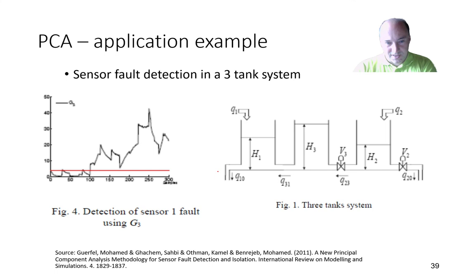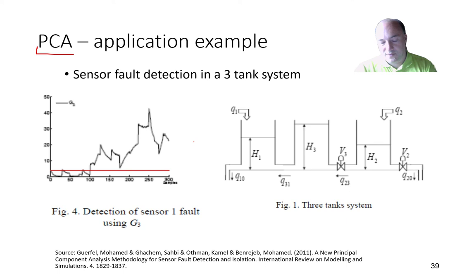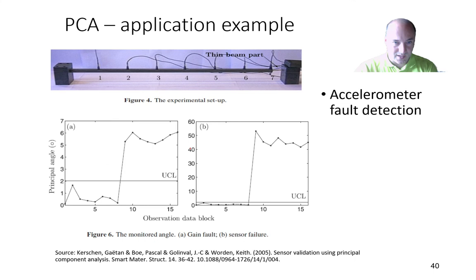For detecting this fault, we will use the PCA method focusing on the squared prediction error (SPE). If the prediction error is larger than some threshold, we have a faulty reading. The second example is a simpler system with three tanks, representing an industrial process such as mixing products or multi-stage heating. If one sensor fails — for example a liquid level or flow sensor — again PCA can detect the sensor fault, with the SPE below the threshold indicating normal operation and above the threshold indicating a fault.